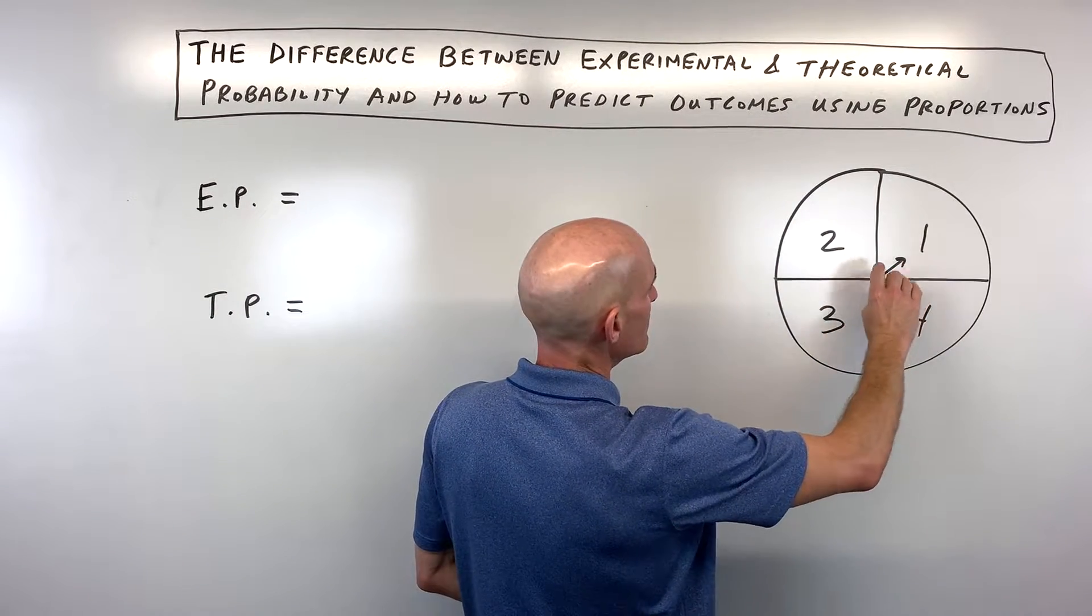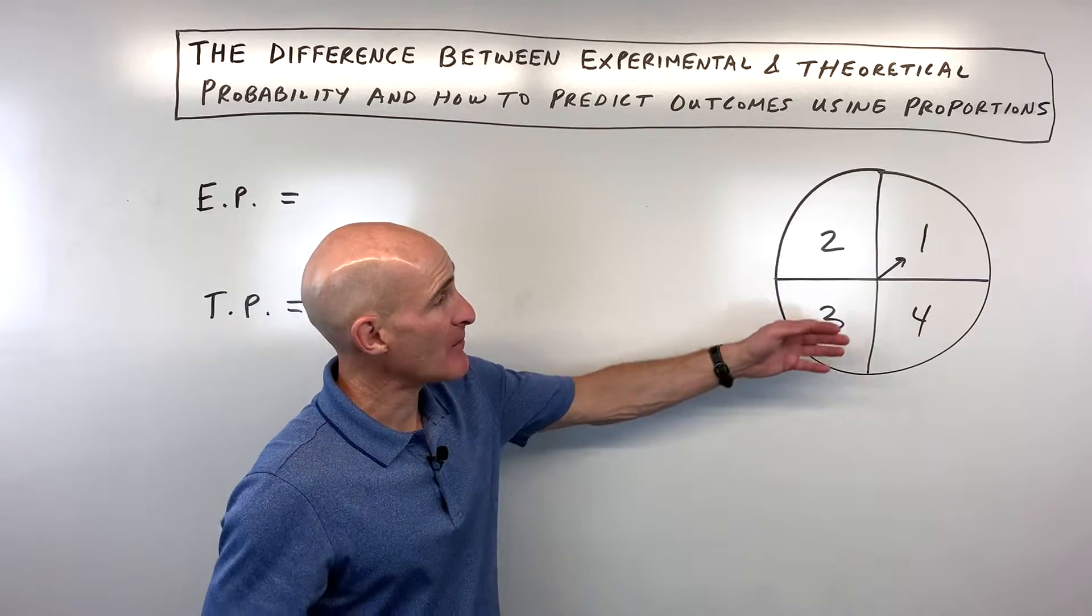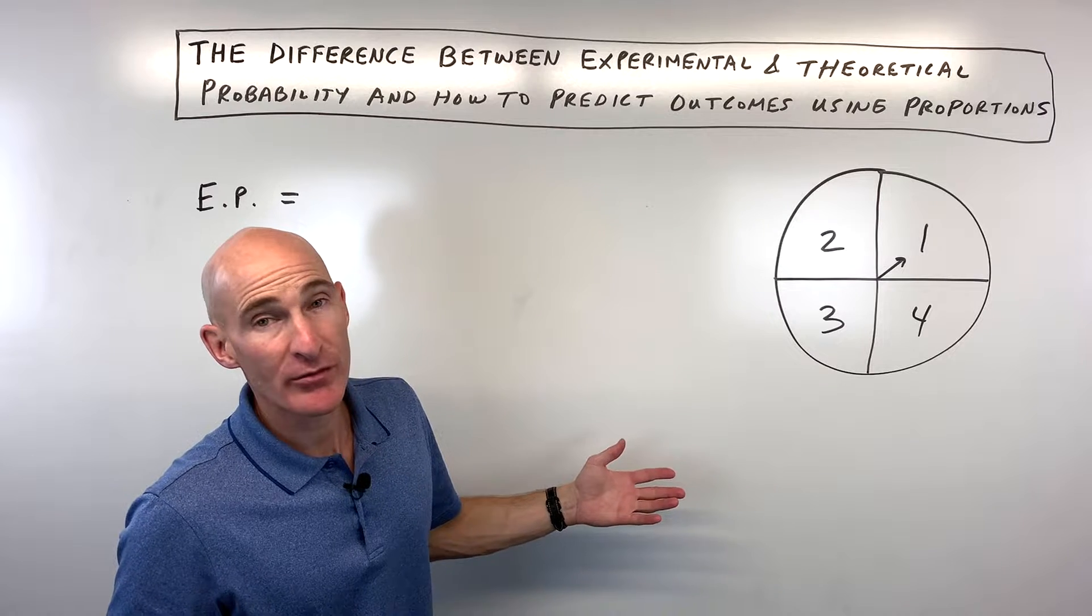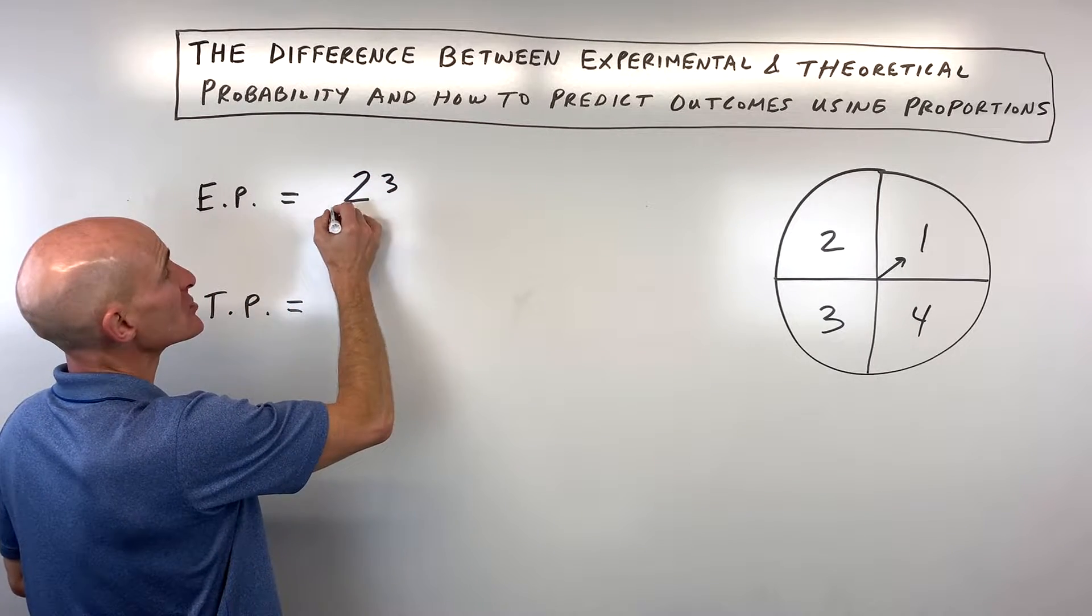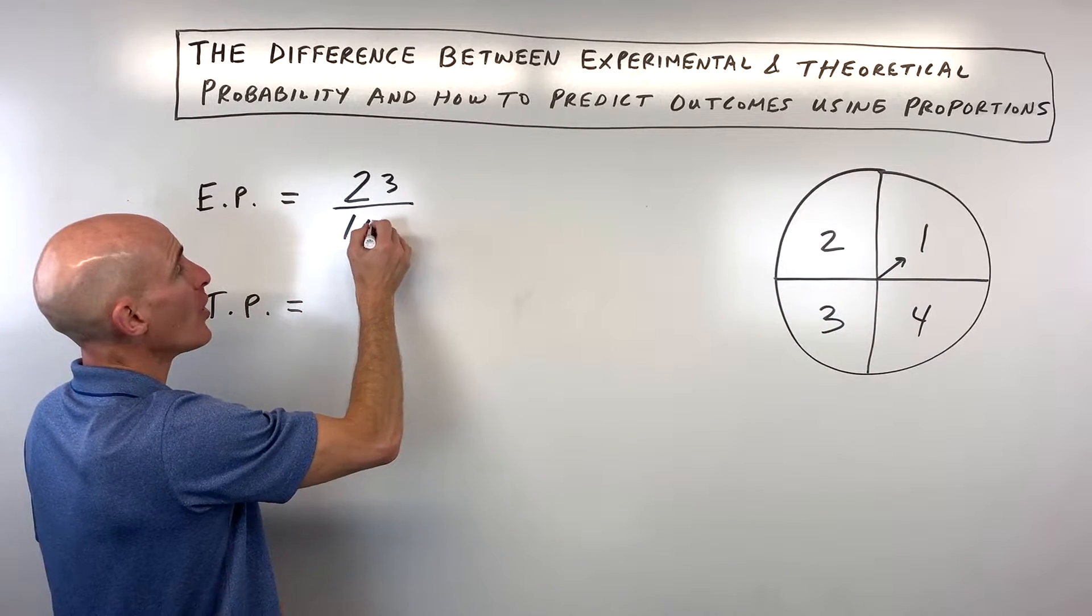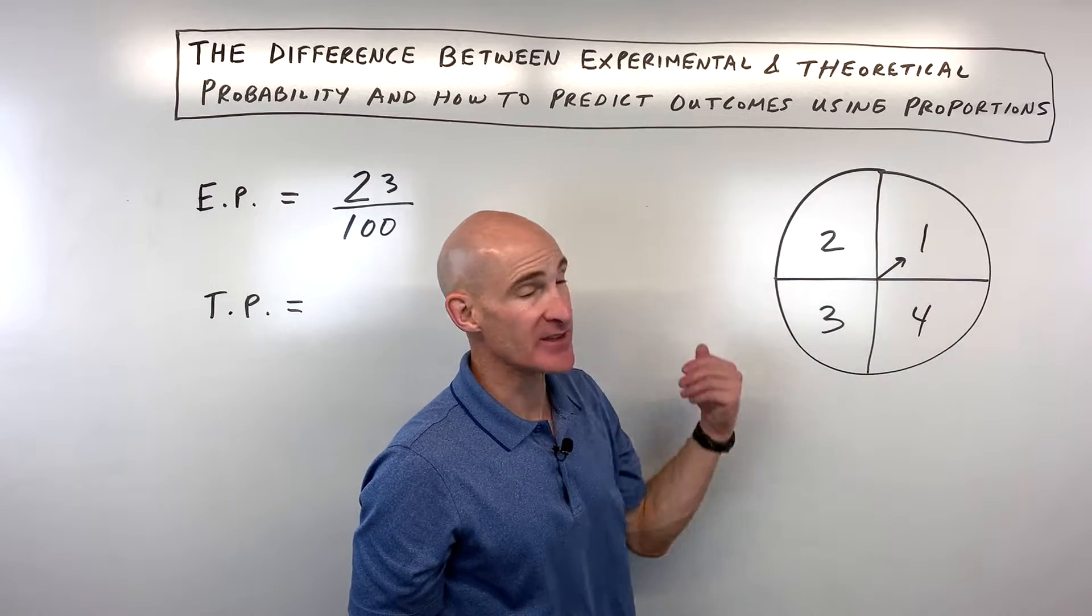And let's say it came up on the number one, 23 times. So we would say our experimental probability is 23 successes, which is what we were looking for getting a one, out of 100 trials, basically 100 spins.